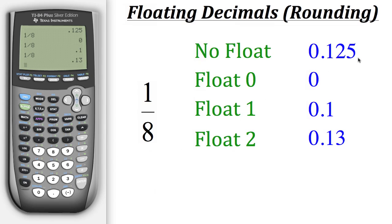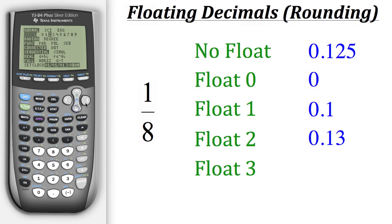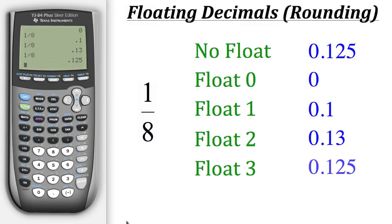That makes sense because the five bumps our two up to a three. Now if we change our float settings to give us three decimal places, doing one divided by eight gives us three decimal places, which is 0.125.